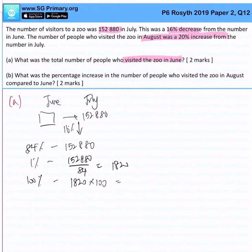So 100% would be 1,820 times 100, giving me 182,000. That is the amount in June. Let's look at part (b): what was the percentage increase in the number of people who visited the zoo in August compared to June?